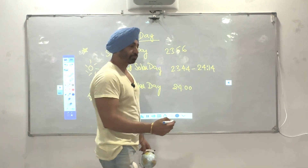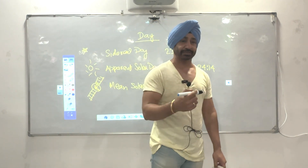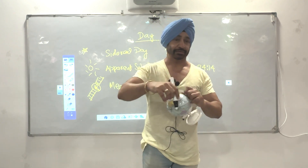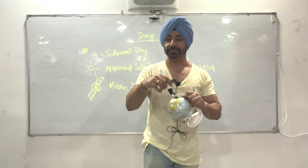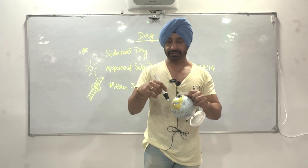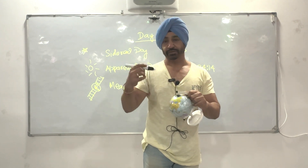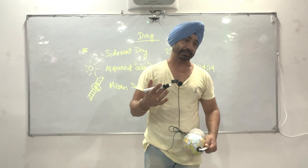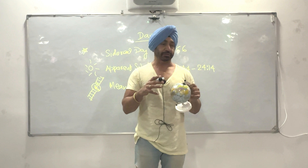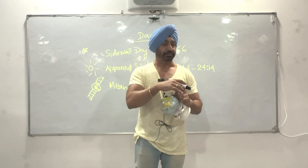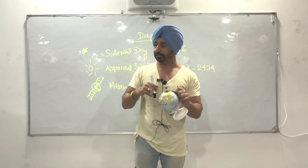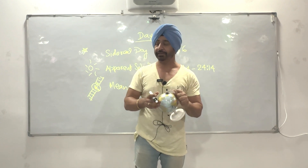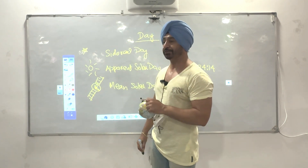What we use practically is 24 hours, which is referred to as the mean solar day. That is what we use in our watch. This is with respect to an imaginary sun which goes around the earth over the equator at a fixed rate — 360 degrees in 24 hours, meaning 15 degrees per hour. And that is called the mean solar day.